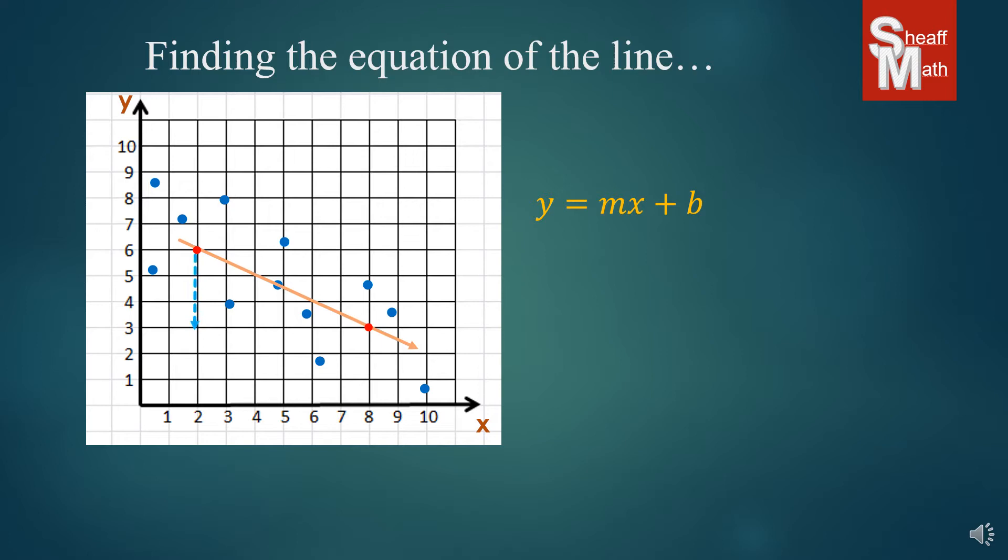So first we find the slope. From the two red dots that I have on perfect points, we go down 3 and then we go over 6. So negative 3 over 6 is your slope, which can be simplified to negative 1 half. So we'll put that in for the m.